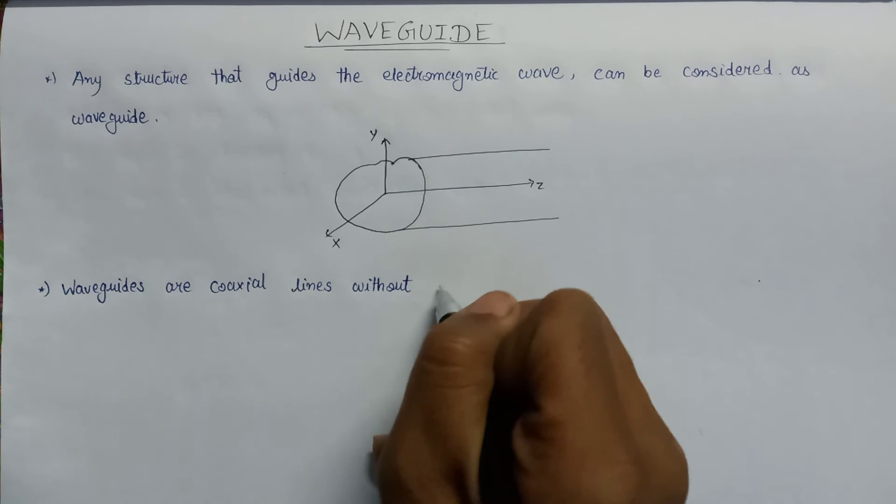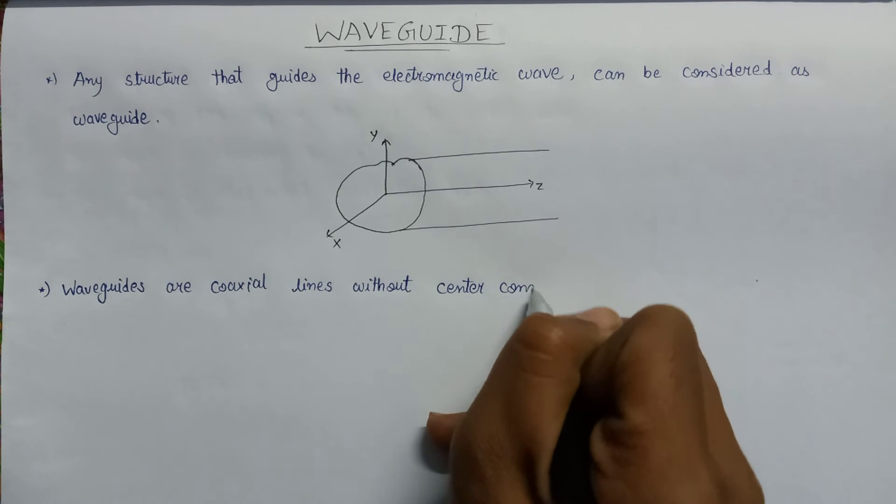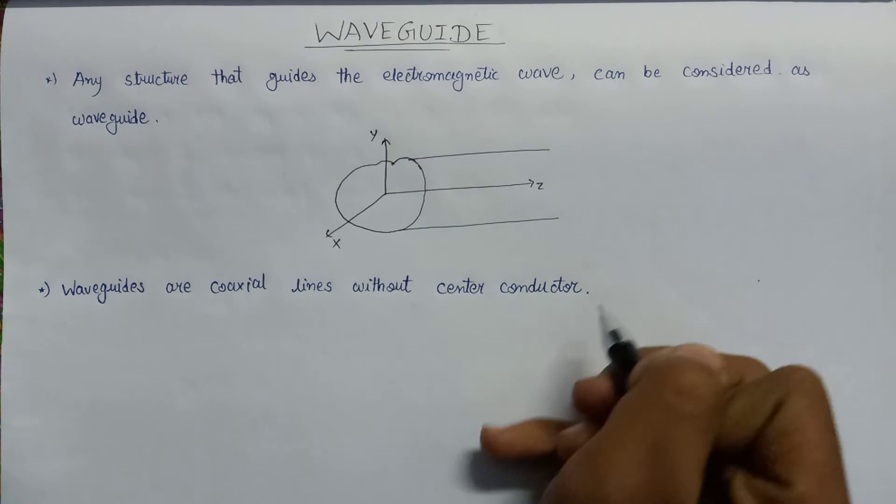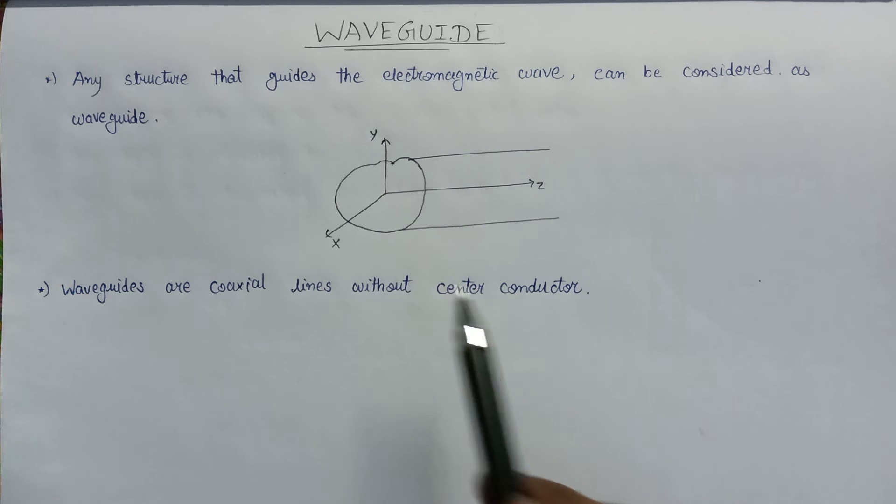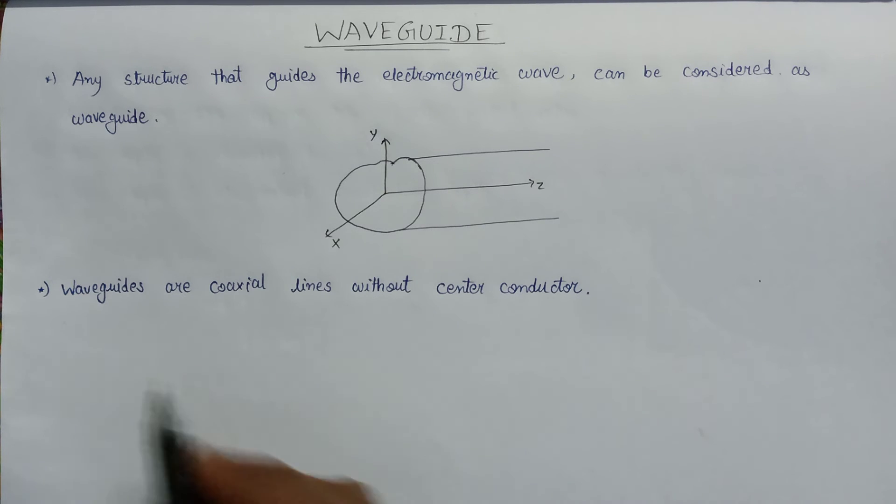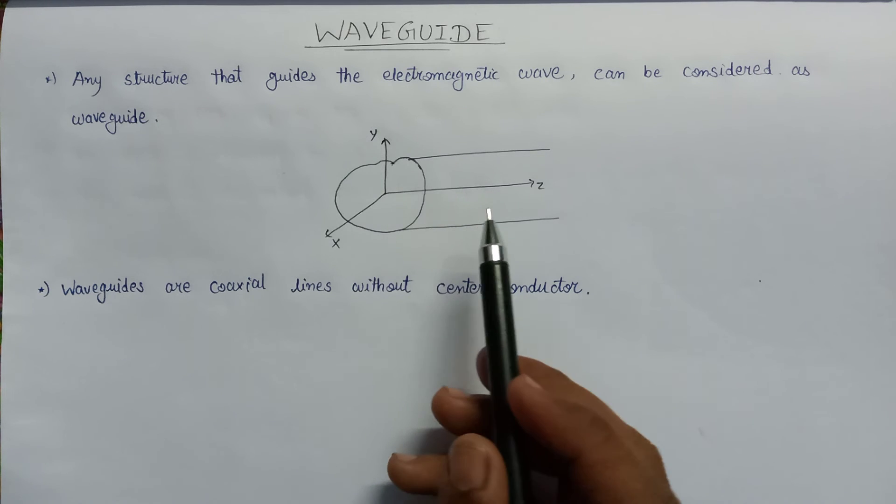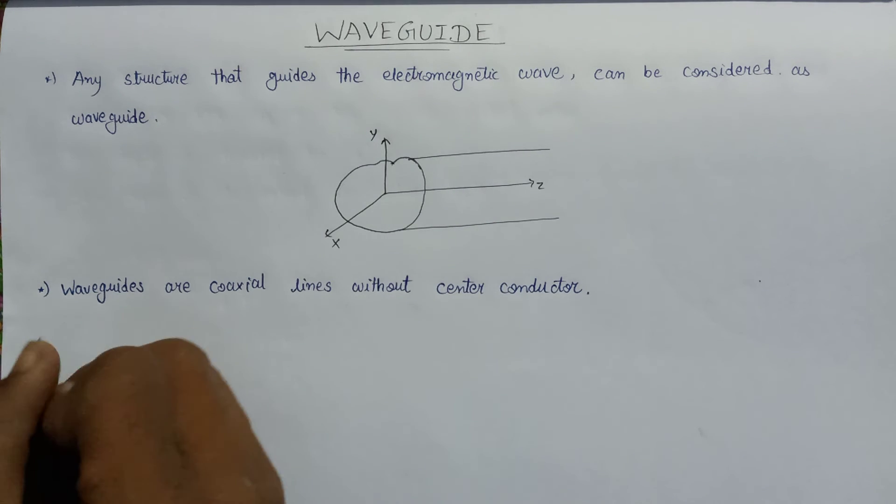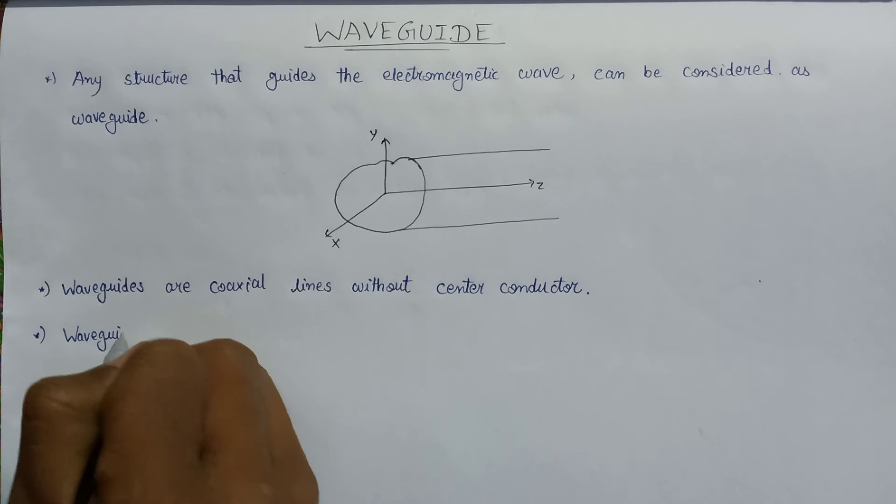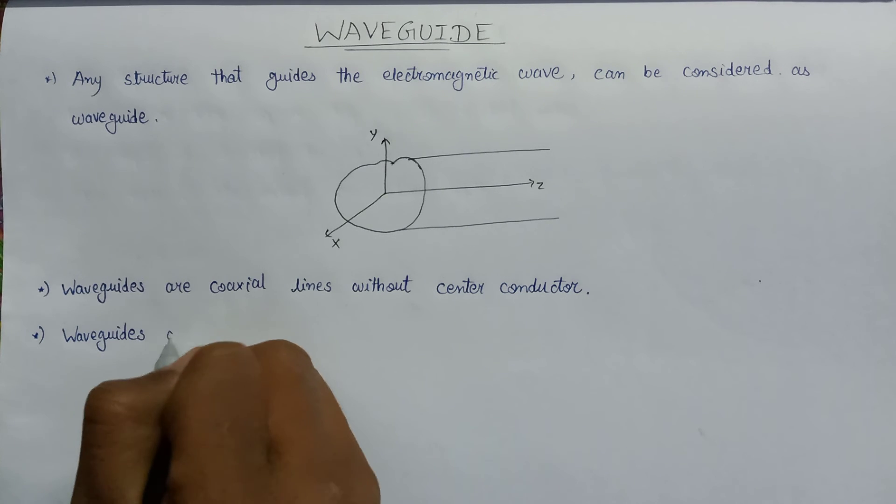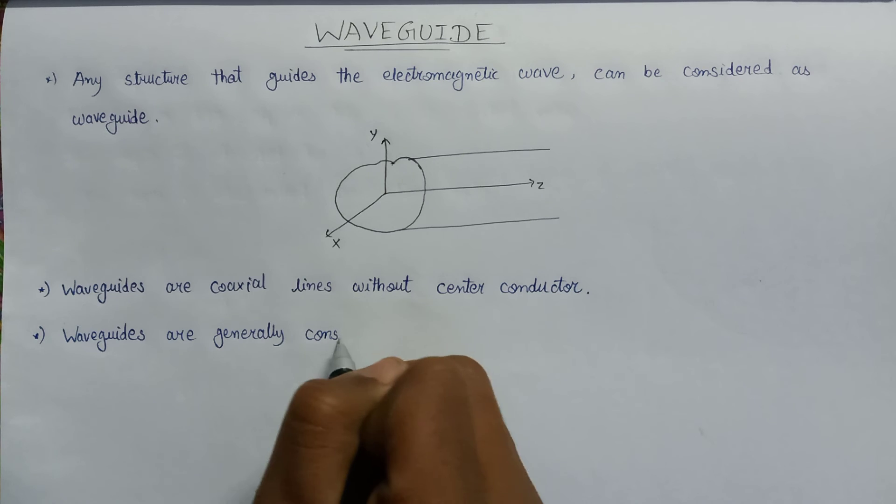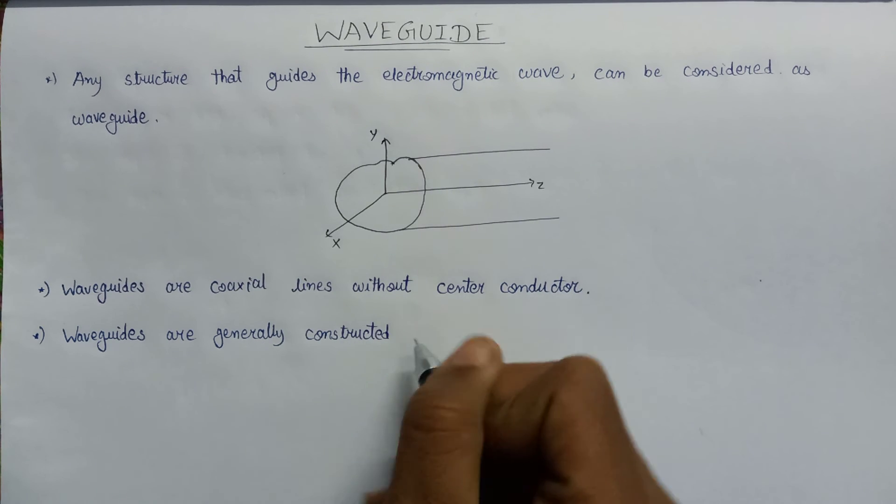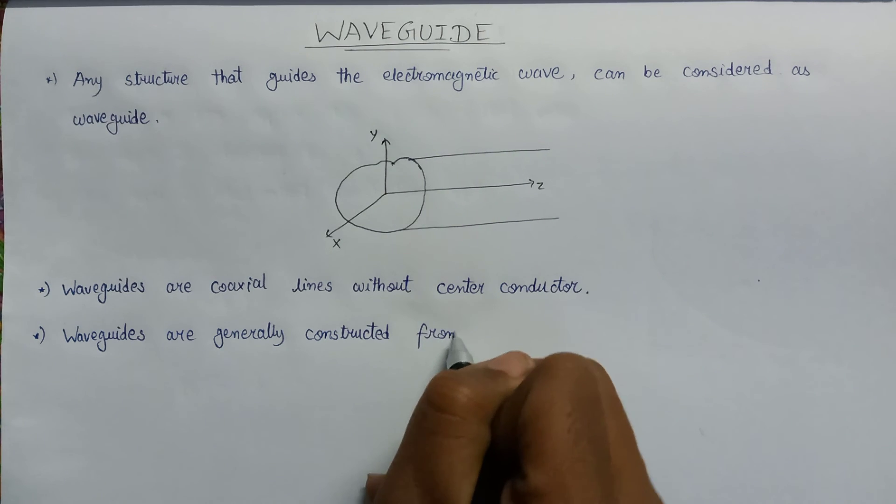Here is the structure of the waveguide. We can conclude that waveguides are generally constructed from conducting material only, because the basic functionality is to propagate the incoming electromagnetic wave.